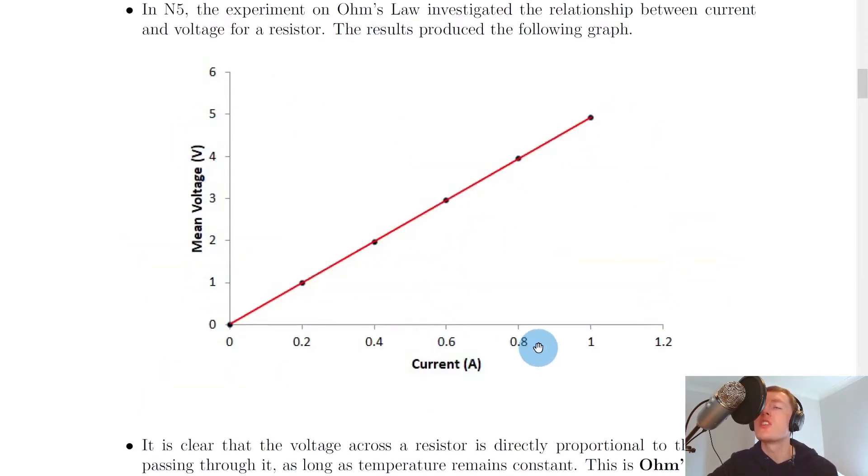Remember, a straight line through the origin graph tells us that the two variables on the axes are directly proportional. This just means as one of them goes up, the other one goes up at the same rate. Or if one goes down, the other one goes down at the same rate.